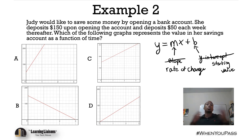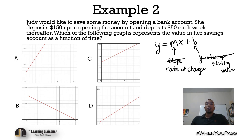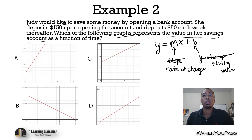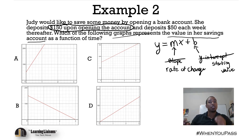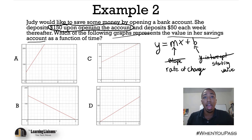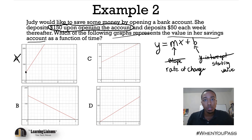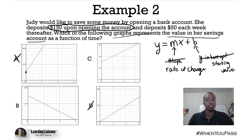Judy is trying to save money. We need to identify the graph that represents her savings account value. If we can identify the starting value and the rate of change, we're good. The starting value: upon opening the account, she deposited $150. So whichever graph we look at — A, B, C, or D — we should have an initial value of $150. Graph A starts at $50, so no. C starts at $150, good. B starts at $150, good. D starts at zero, so no. We're down to C and B.